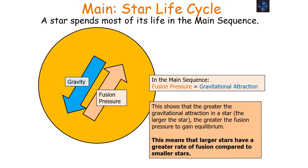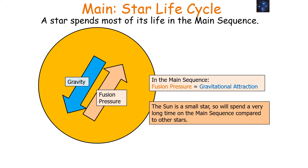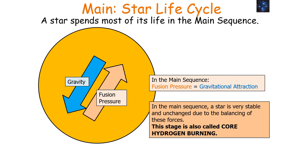Larger stars will have to have a greater rate of fusion compared to smaller stars, because larger stars need that greater fusion pressure to balance out the greater gravitational attraction. So larger stars spend less time on the main sequence than smaller stars. Because the Sun is quite a small star, it will spend a very long time on the main sequence. The star is very stable and unchanged due to the balancing of these forces. This stage can also be called the core hydrogen burning stage.